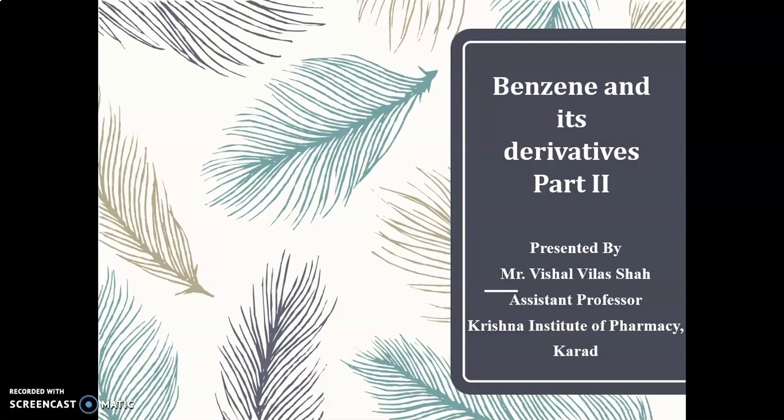In the last part, we have seen the introductory part of benzene — the meaning of aliphatic compounds and aromatic compounds. We also covered different mono-substituted benzene, di-substituted benzene, and poly-substituted benzene. Today we are going to start with the next part: the structure of benzene.